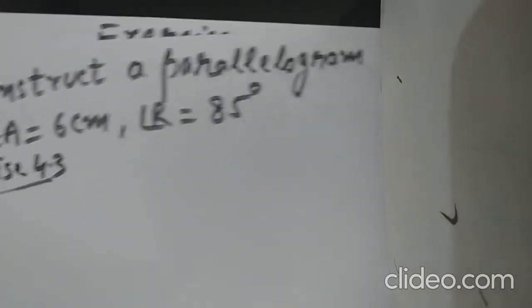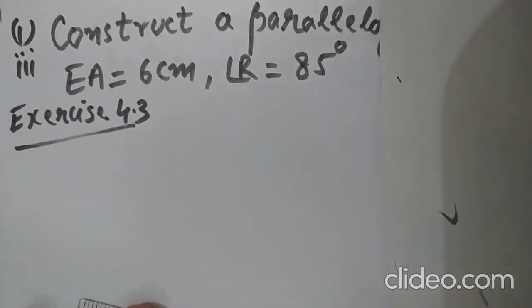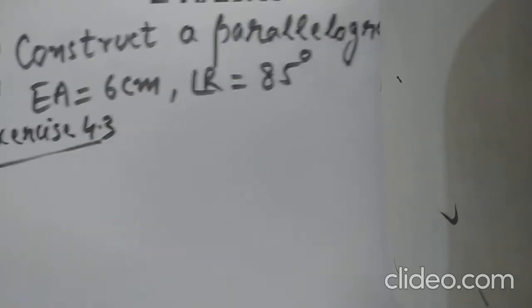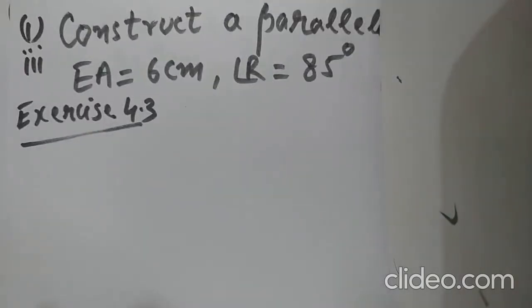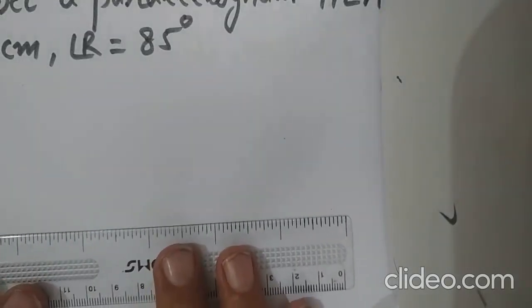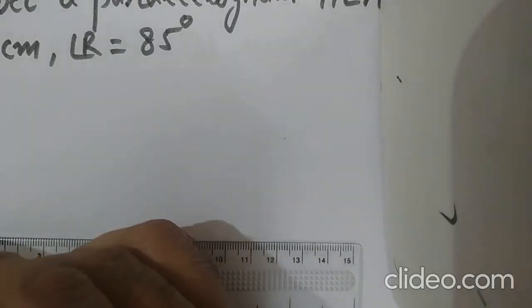Construct a parallelogram HEAR with HE equal to 5 centimeters, EA equal to 6 centimeters, and angle R equal to 85 degrees. So first of all we need to construct a simple rough parallelogram.